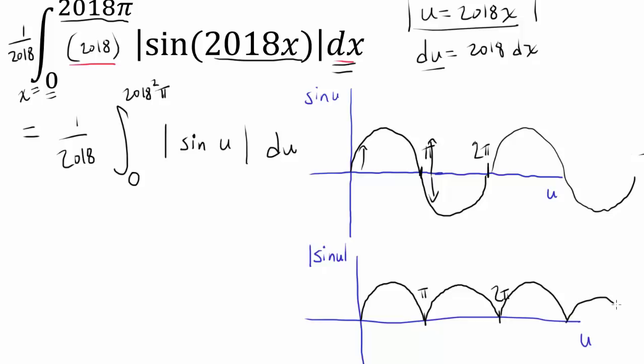So for absolute value of sine of u, we are going to have a bunch of these mountains. We have a bunch of these mountains that's rising on top of the u-axis, and we are finding the areas, so we are summing up the areas of these mountains. And how many mountains do we have? Well, we have one mountain when we stop at 1π. We have two mountains when we stop at 2π. But we are stopping at 2018 squared π. So we have 2018 squared mountains, one for each period of π.